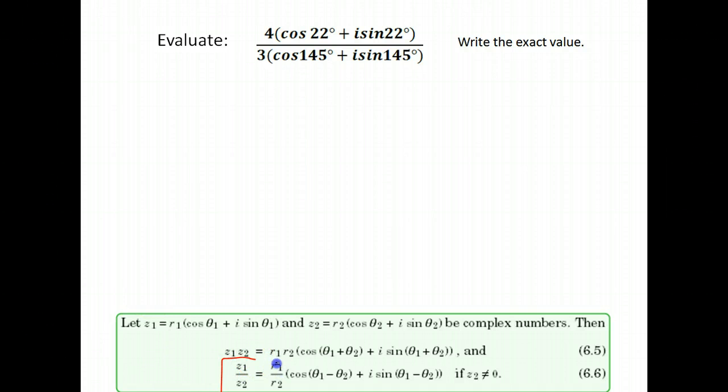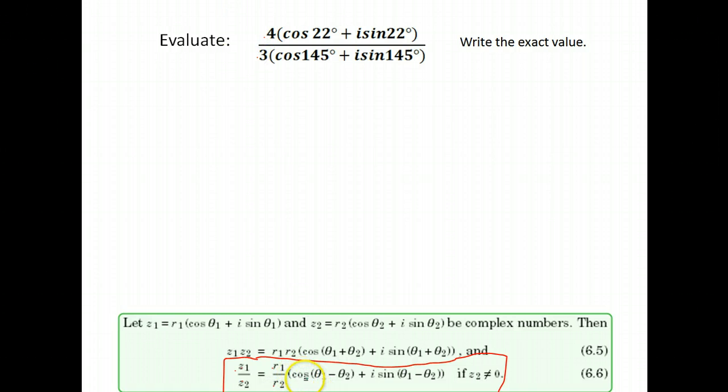We do have a formula from our text. It says Z1 divided by Z2, one complex number in trig form divided by another, is R1 divided by R2. R is the number out in front, and then you have cosine of your angle subtracted plus i sine of your angle subtracted. For your angles, you take the angle that's in the numerator minus the angle that's in the denominator. That does make a difference.